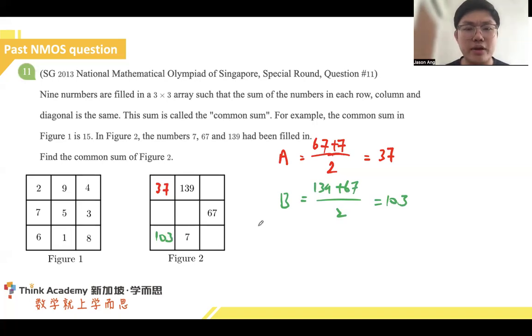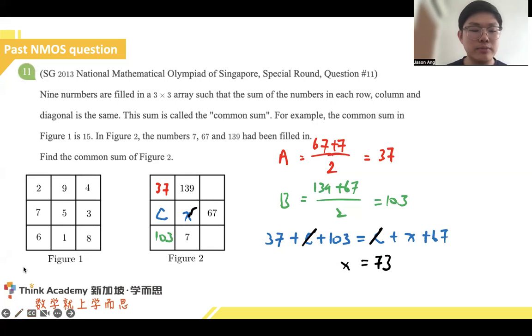But how are these numbers going to be very helpful for me? I'm going to add in a number C over here, which would then suddenly make it so much easier. Let's see C. 37 plus C plus 103, if we look at your column. And we look at the row now, this equals to C and I have an X in the middle. C plus X plus 67. I know that we can cancel out some common numbers. C, C. This allows us to find the middle value X very quickly. 103 plus 37 we get 140. Minus 67 we get number 73. And with the middle number being known.